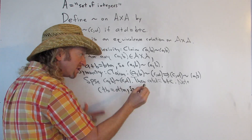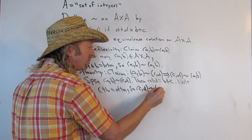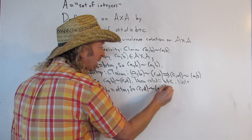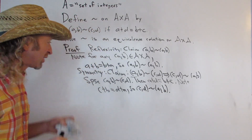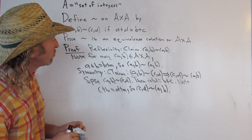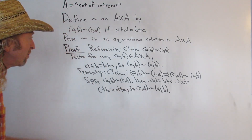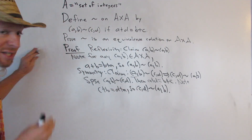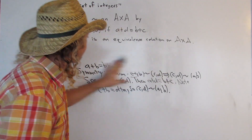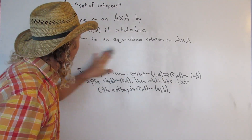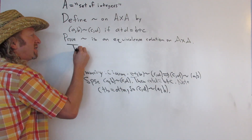This shows that CD is related to AB. There's a lot to think about when you do these problems. The last thing to prove is transitivity. I'm running out of room, so I'm going to erase this. It erased. Beautiful. Let's prove transitivity.